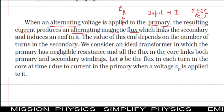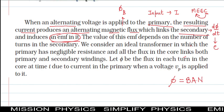The secondary coil is linked with the primary's magnetic flux, and the flux is changing with respect to time. Hence, using Faraday's second law, the secondary coil will have an induced EMF in it. The value of this EMF depends upon the number of turns in the secondary, because phi equals magnetic field B into area A into the number of turns N. Once construction is done, B and A are fixed, so magnetic flux is directly proportional to the number of turns.